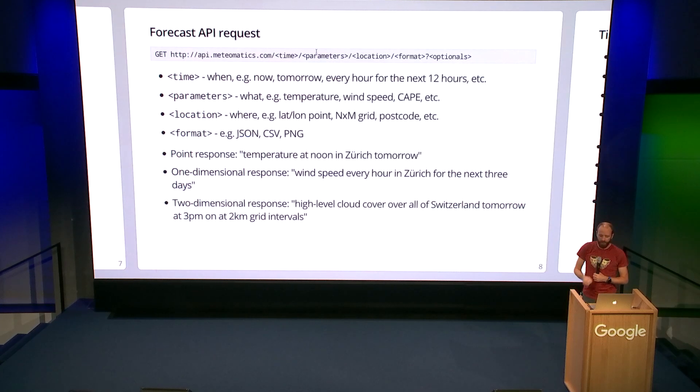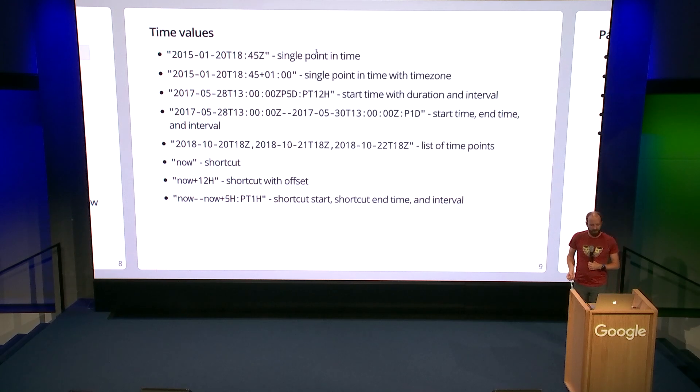This is what the current MeteoMatics API looks like. It's an HTTP GET request. In there, there are three key parameters: time, parameters of location - when you want the forecast for, what you want, and whereabouts you want it for. In response, you get different structures: a point response for a single example here, temperature at noon tomorrow; a one-dimensional response, something evolving over time or space; or even a two-dimensional response. These things go into the URL, and everything is a string. These are the example time values here. There's lots of different formats for these strings, expressing different types of time, what you want.